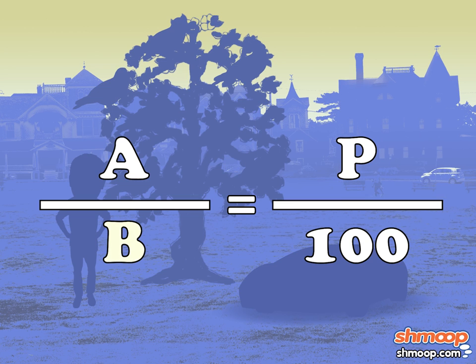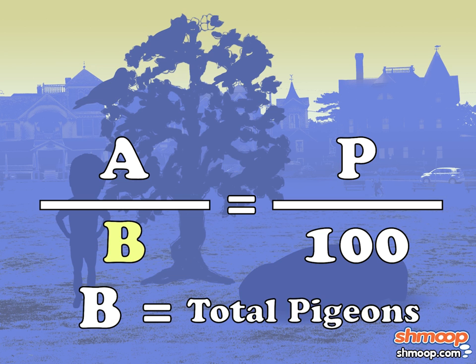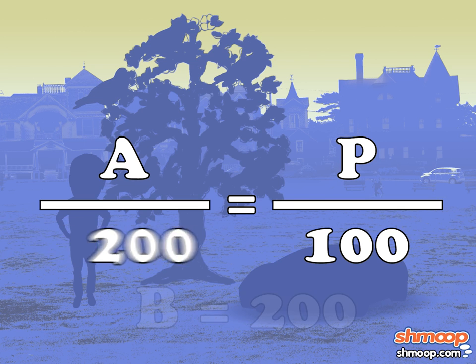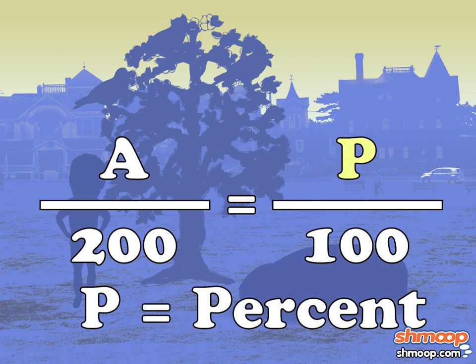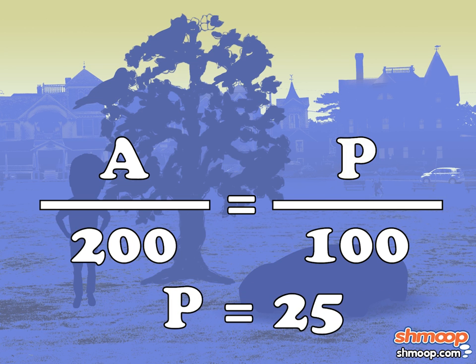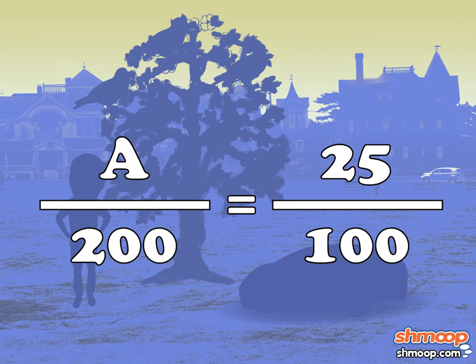Which numbers can we plug in? Well, b is our total number of pigeons, which we know is 200. And p is our percent, which we know is 25. Now the equation only has one variable, so let's solve for a.